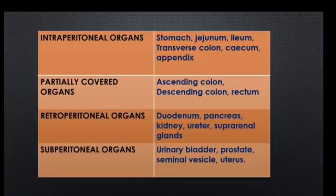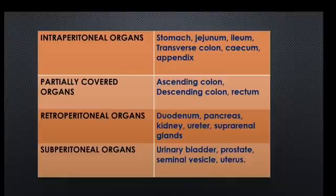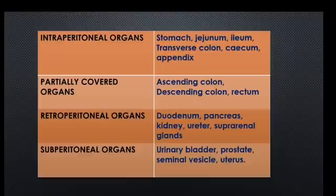The intraperitoneal organs are the stomach, jejunum, ileum, transverse colon, cecum, and appendix. Partially covered organs — partly covered by peritoneum — are the ascending colon, descending colon, and rectum. The rectum is present in the pelvic cavity, but its anterior wall is covered by peritoneum making it partially covered. Retroperitoneal organs in the posterior abdominal wall are the duodenum, pancreas, kidney, ureter, and suprarenal glands. Subperitoneal organs in the pelvic cavity are the urinary bladder, prostate, seminal vesicle, and uterus.